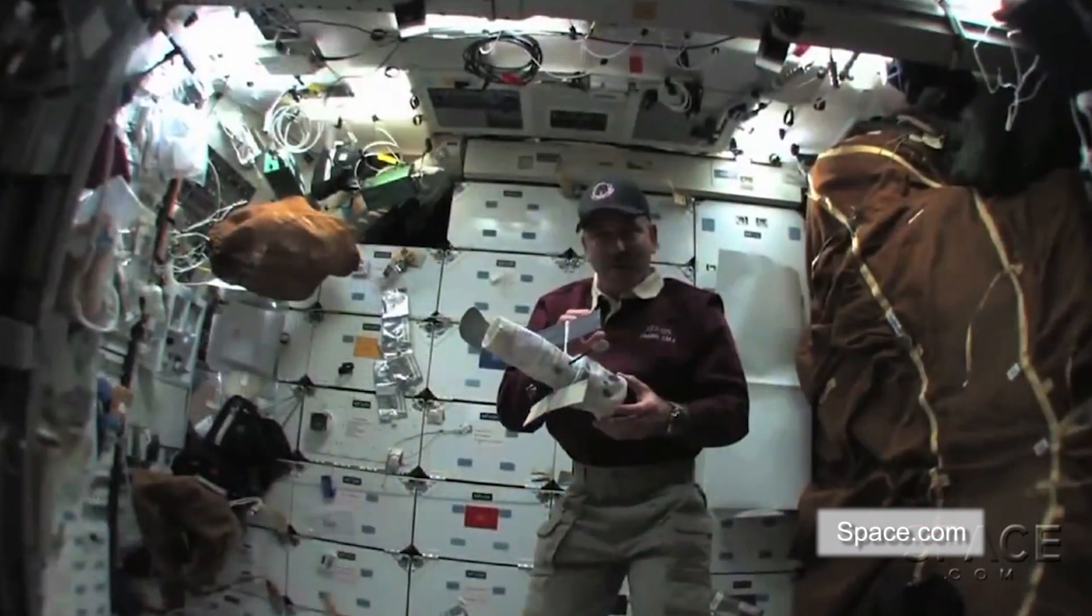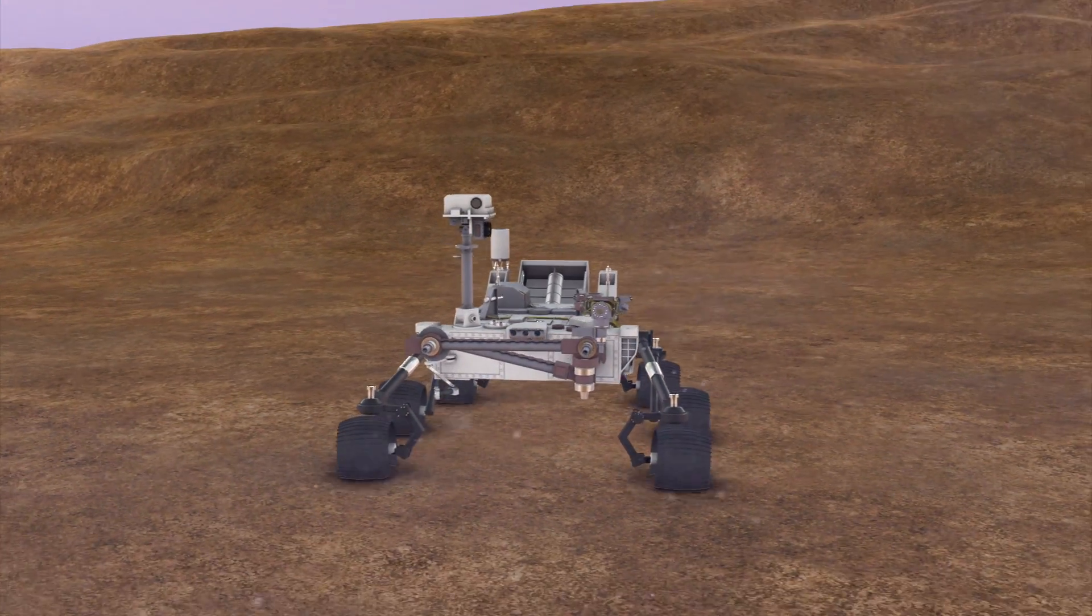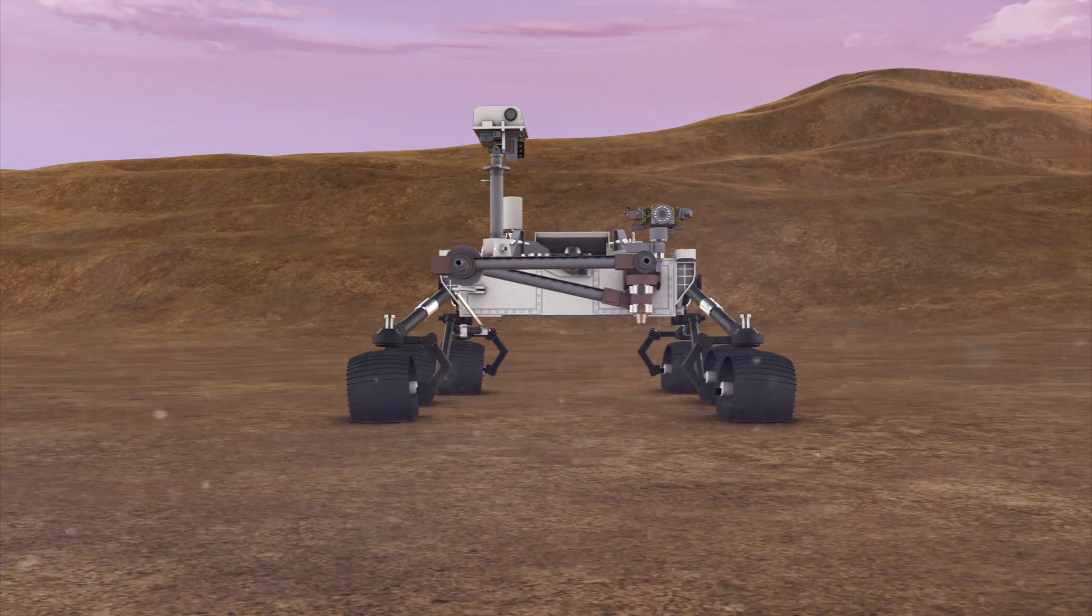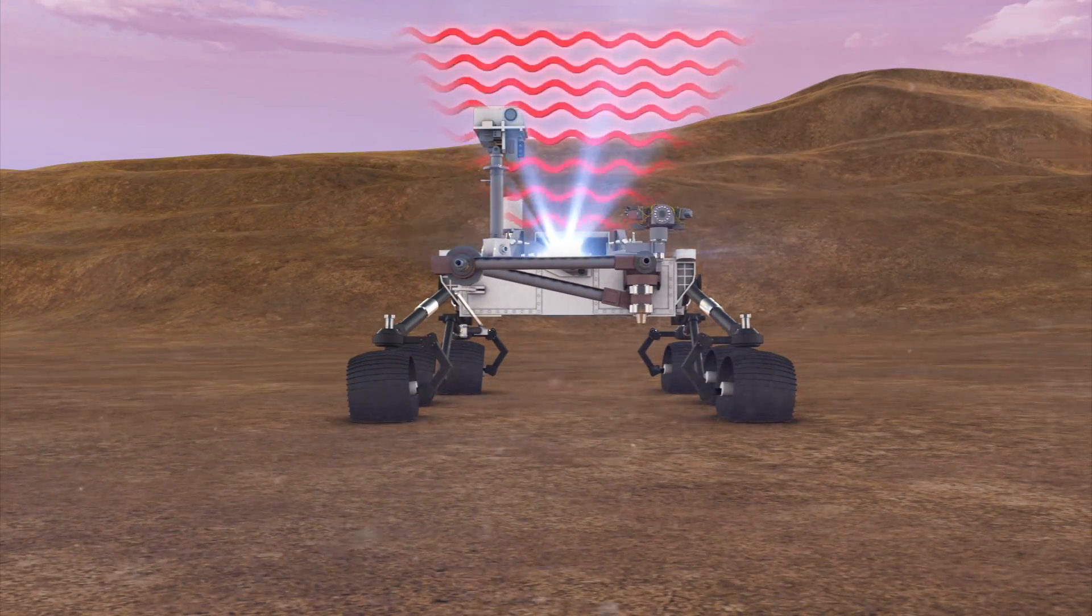US space agency NASA will have to find creative solutions to overcoming the hazards of space radiation for future manned missions to Mars. Radiation readings from the Curiosity rover en route to and while on Mars revealed levels dangerous to humans.